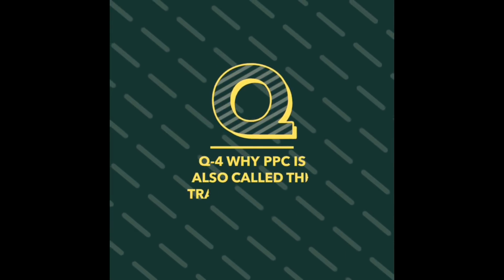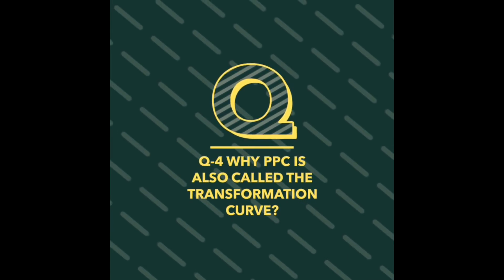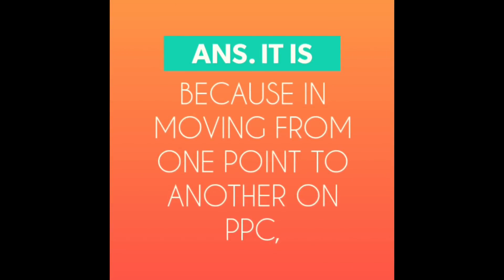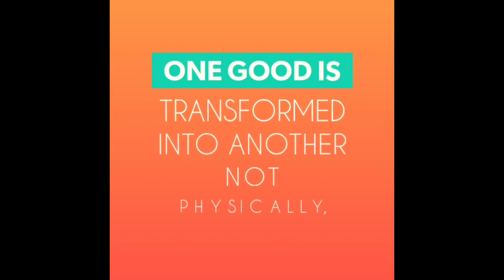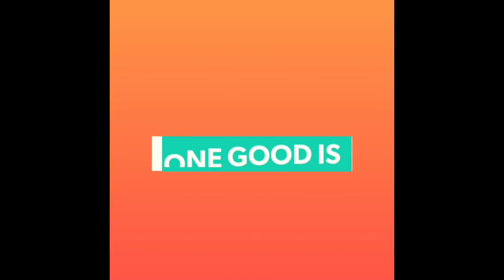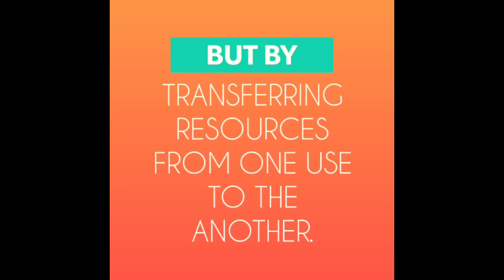Question number four: why is the PPC also called the transformation curve? It is because in moving from one point to another on the PPC, one good is transformed into another — not physically, but by transferring resources from one use to another.